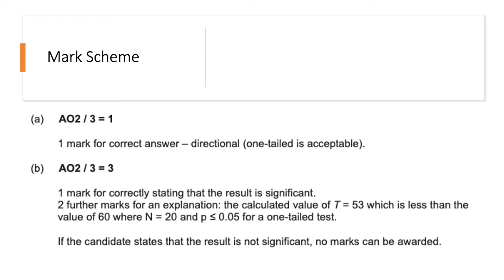Remember the rule of R. So Wilcoxon doesn't have an R in it, therefore the calculated value has to be less than or equal to the critical value, which it is because 53 is less than 60.